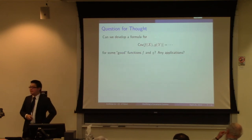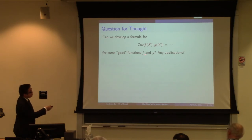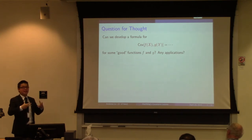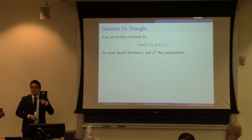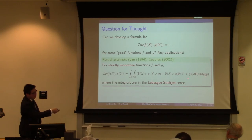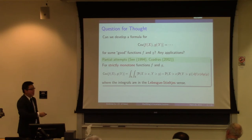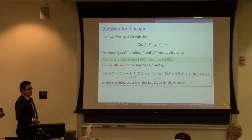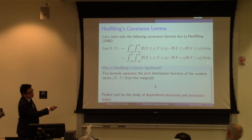What I'm going to do today is to extend Hoeffding's lemma from the covariance between X and Y to the covariance between a function of X and a function of Y, where f and g are some well-behaved functions satisfying certain properties. In the literature there were some attempts to generalize this formula, and in those research papers a formula was proposed for strictly monotone functions — simply replacing the differential dx dy with df(x) dg(y), going from Lebesgue integrals to Lebesgue-Stieltjes integrals. If f and g are the identity functions, the formula reduces to the original Hoeffding's formula.